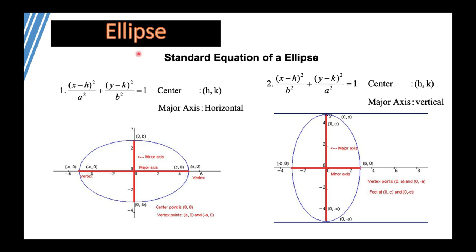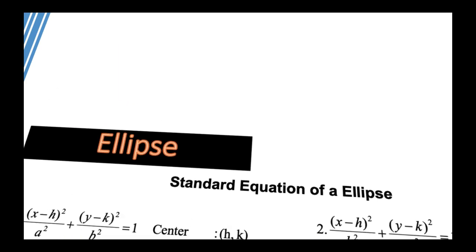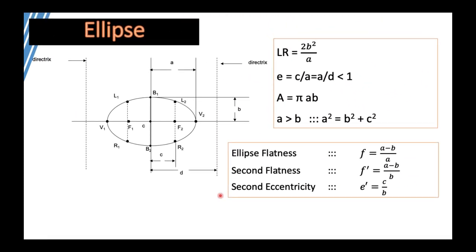To avoid confusion, I just memorize one case — for example, when the major axis is horizontal — so I don't get mixed up. The center of the ellipse is at (h, k). The ellipse has two vertices, vertex 1 and vertex 2; two foci, focus 1 and focus 2; and a center. There are three main parameters: A, B, and C.